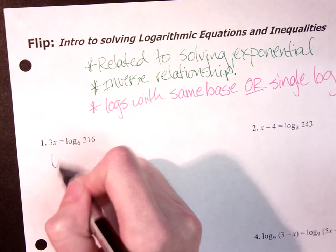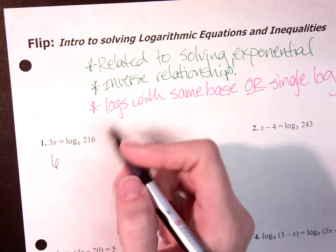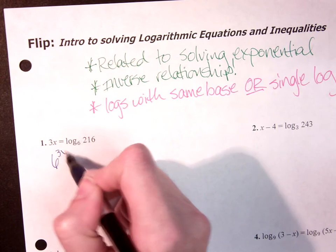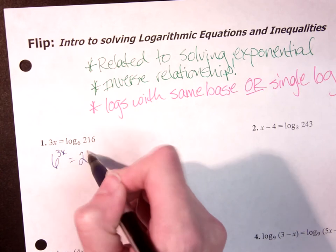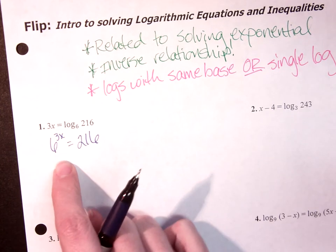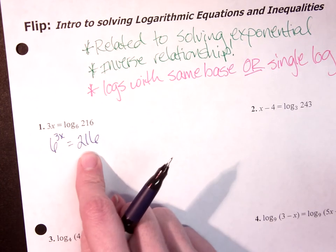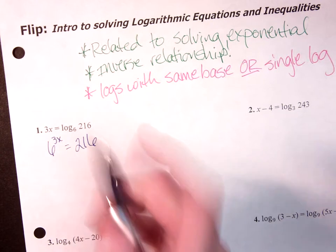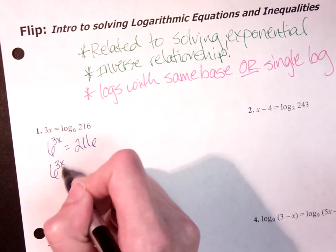This is asking, this says 6 to the 3x power is going to equal 216. Now we're right back with the exponential that we started with, and I want to try to get 216 as some power of 6.